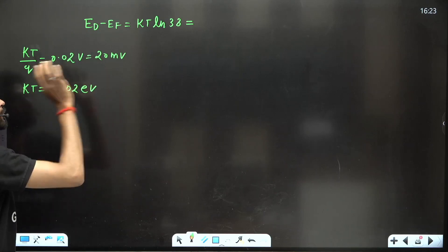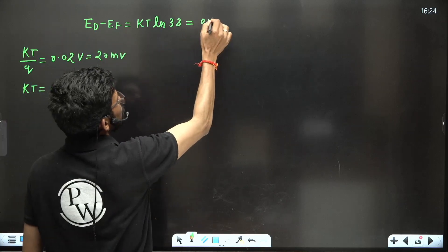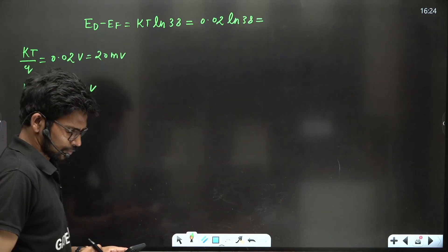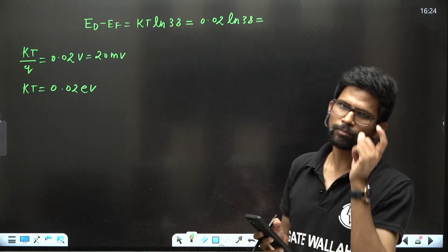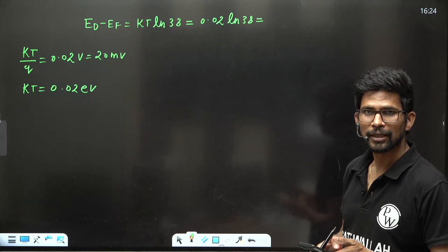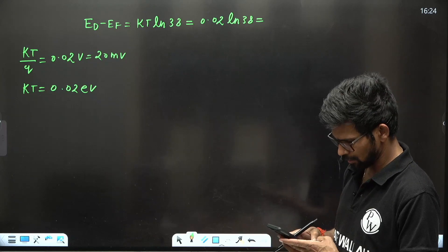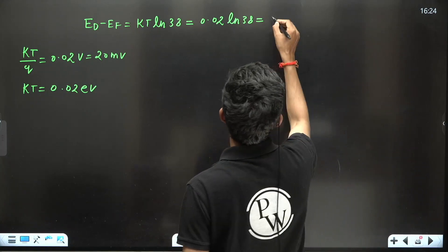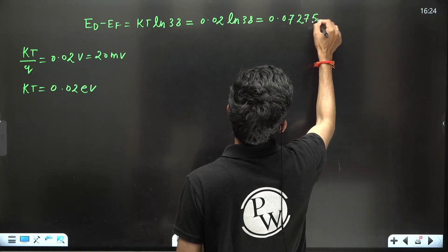If KT/Q is in millivolt, then KT is in millielectron volt with the same magnitude. Using KT = 0.02 eV and solving 0.02 times ln(38), we get ED minus EF equal to approximately 0.07275 electron volt.